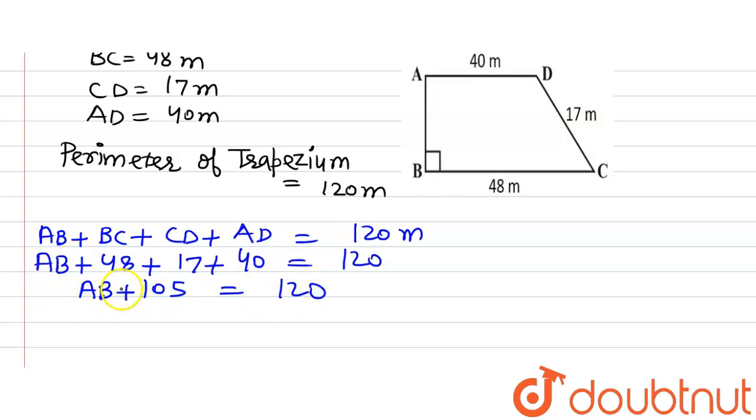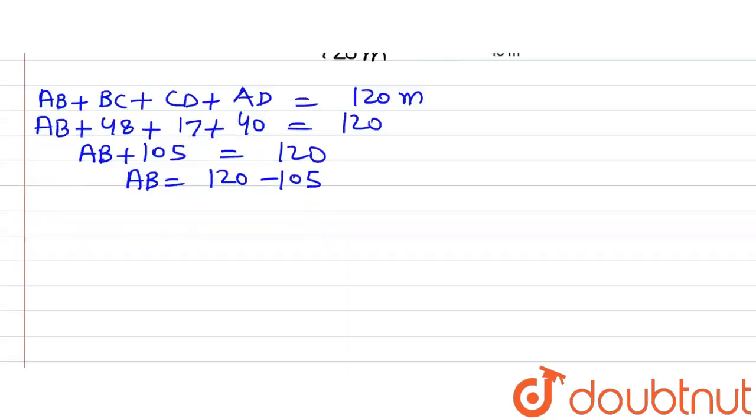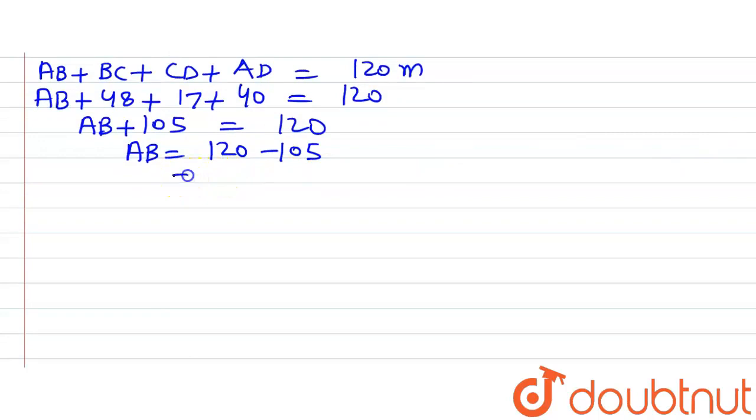Now this 105 will go to the right hand side of the equation and will turn because it is having a plus sign. So it will get turned into a negative sign. So 120 minus 105. And when we subtract 105 from 120, we will get AB is equals to 15 meter.